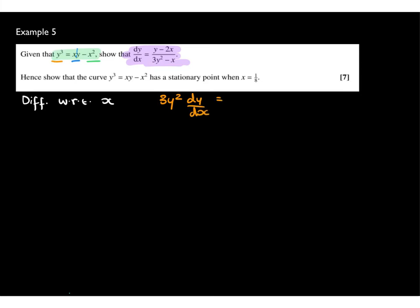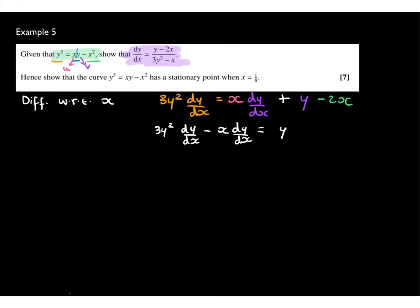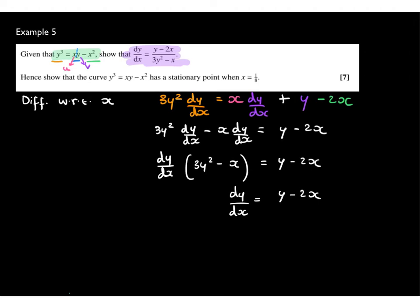Collecting like terms: 3y squared dy/dx minus x dy/dx equals y minus 2x. Factorising dy/dx: dy/dx equals (y minus 2x) over (3y squared minus x).